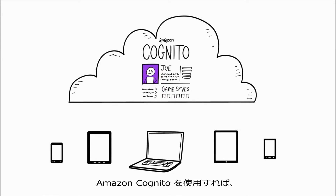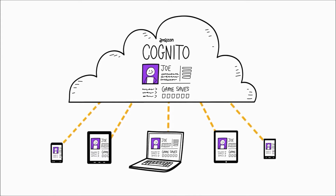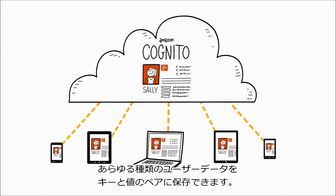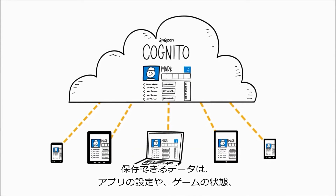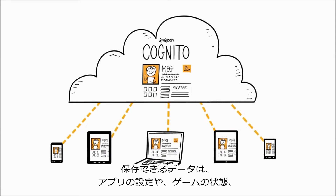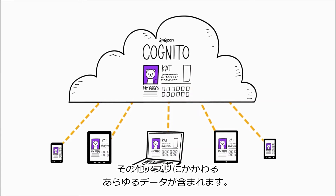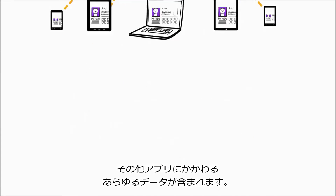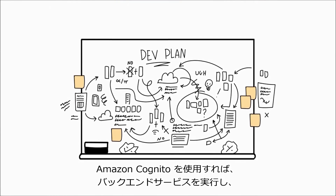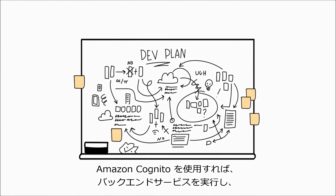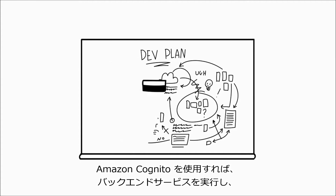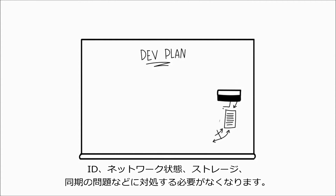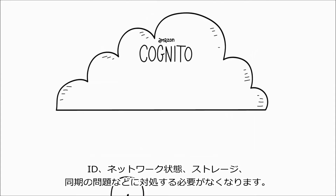You can use Amazon Cognito to save any kind of user data in key-value pairs, whether that's app preferences, game state, or anything that makes sense for your app. With Amazon Cognito, you don't have to worry about running your own back-end service and dealing with identity, network state, storage, or sync issues.